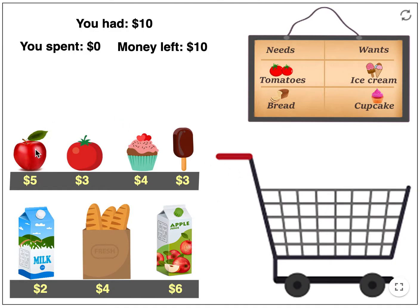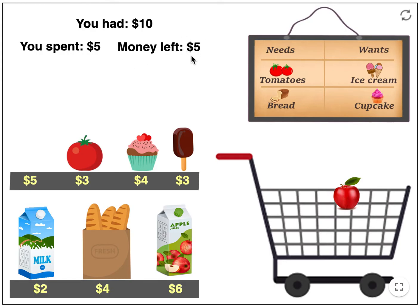To buy an item you have to simply click on the item. Suppose you buy an apple. You had ten dollars. The cost of the apple was five dollars. You spent five dollars, and now you have five dollars left. Can you tell how? Ten dollars minus five dollars is equal to five dollars.